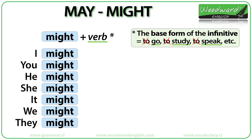After might or may, we have the verb — or more specifically the base form of the infinitive. This means the infinitive without 'to'. For example, the infinitive is 'to go', so the base form is just 'go'. Instead of 'to study', only 'study'. Instead of 'to speak', we only put 'speak' after the modal verbs might and may.